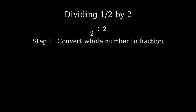The first step is to convert the whole number two into a fraction. We do this by writing it over one. So two becomes two over one.